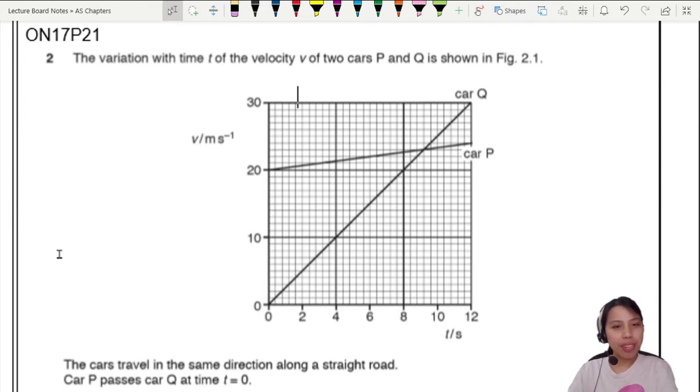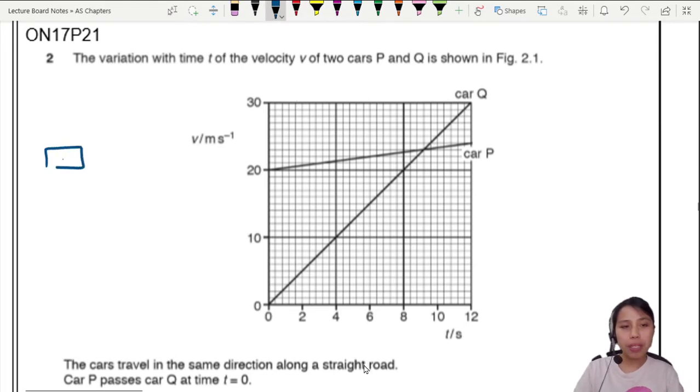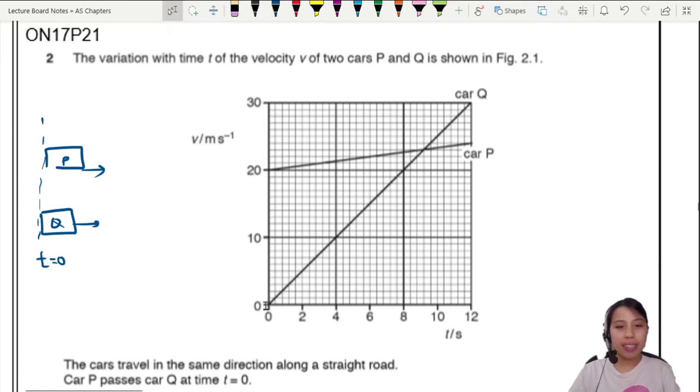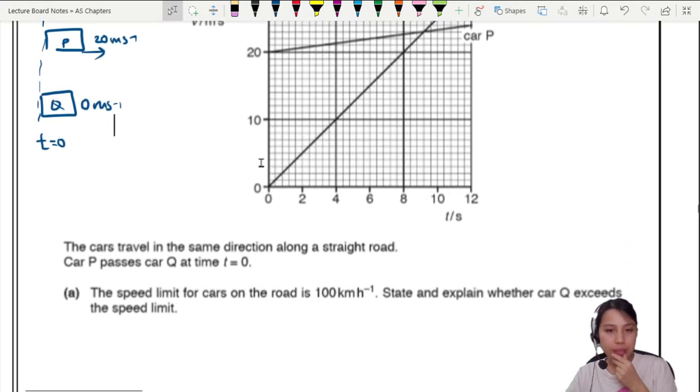So what we have here is a variation of velocity of two cars, car P and car Q. The cars travel in the same direction along a straight road. You can imagine there's a car P and a car Q, they're all traveling in one direction. Car P passes car Q at time T0. So in this moment of time, they're aligned at T0. One car is at rest, one car is already moving at super fast speed. So this one is going to be at 20 meters per second. The other car is like, I just started, I'm at 0 meters per second. So of course, P is going to shoot ahead.